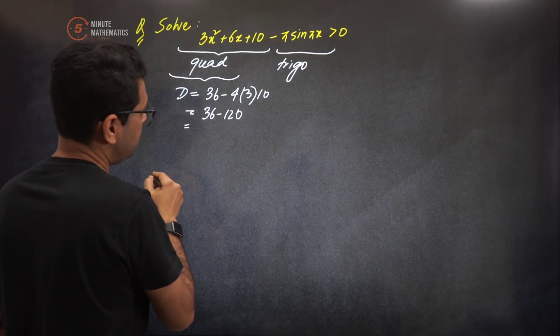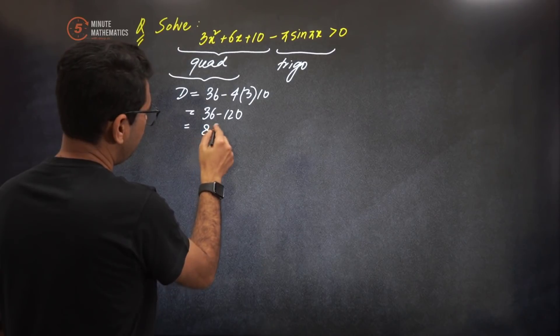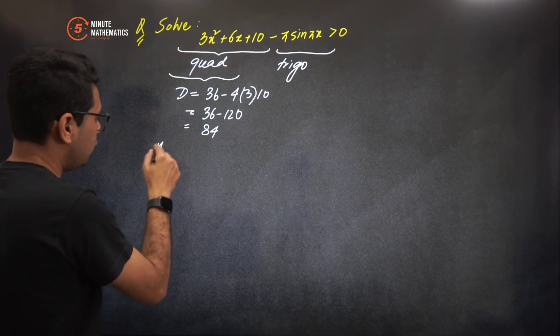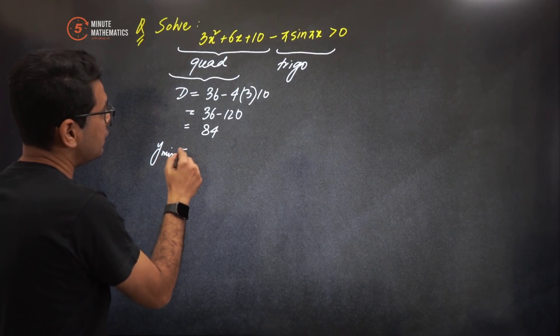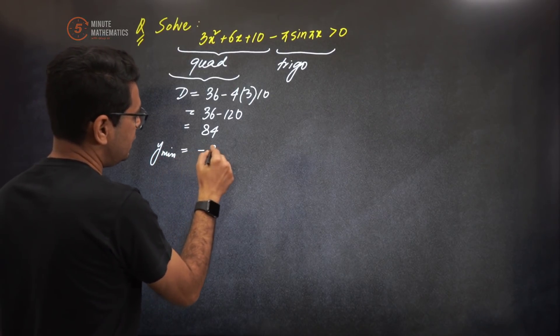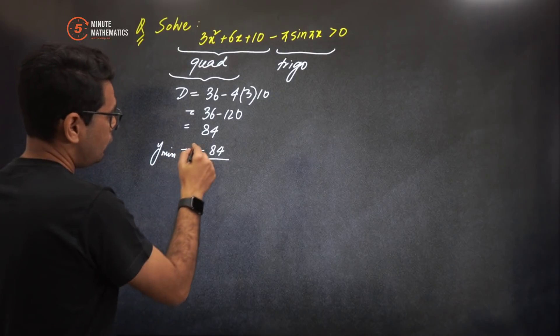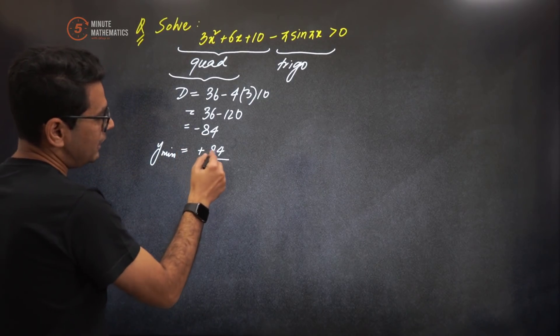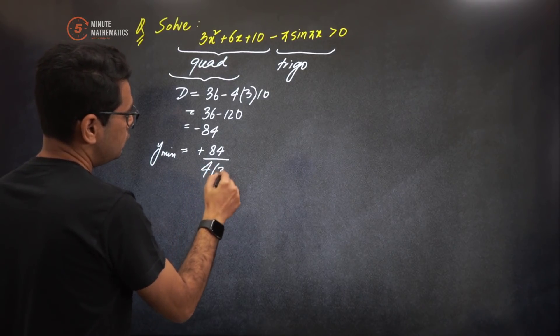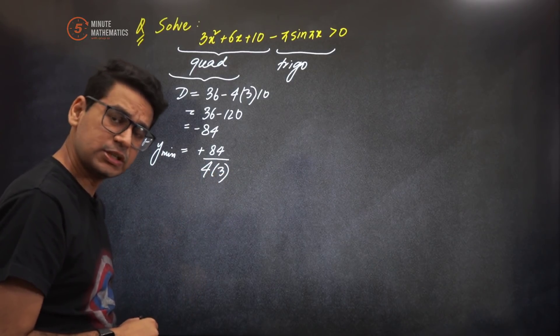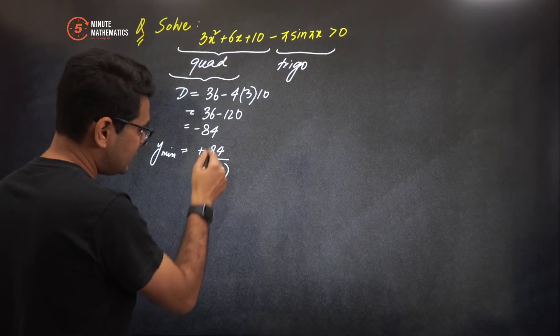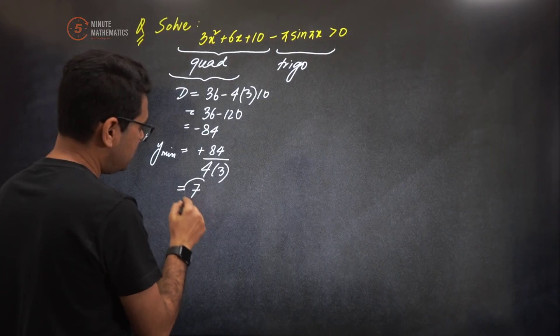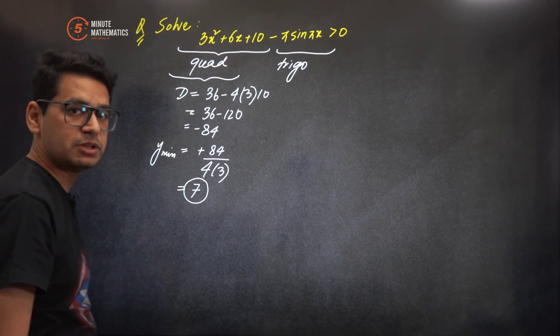We can easily see that this is 36 minus 120, which is definitely a negative value. If we calculate quickly, this will be -84. The minimum value, y_min, if you want to calculate: it's -d, which becomes plus because this value is -84, so it's 84 by 4a, which is 4 into 3. If you check this particular value, it comes out to be 7. So that means the minimum value of this particular function comes out to be 7.